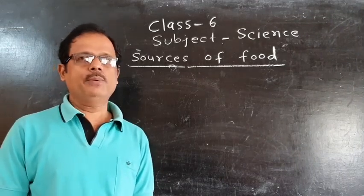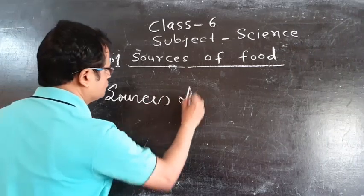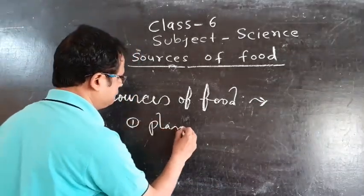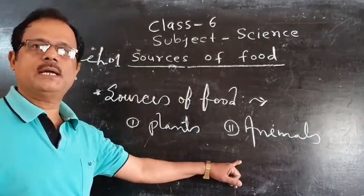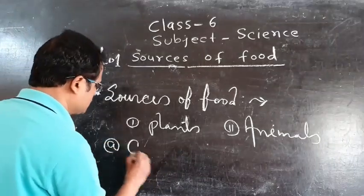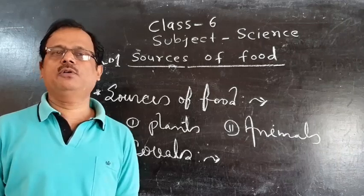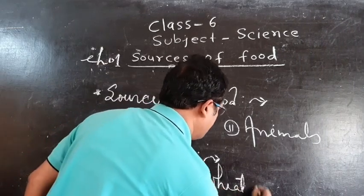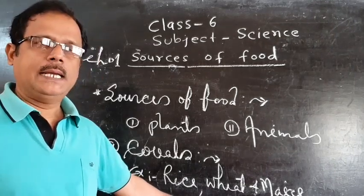After the importance of food, we will learn about the sources of food. There are two important sources: first is plants, and second is animals. From plants, we obtain food such as cereals. Cereals are grains we utilize for food — for example, rice, wheat, and maize. These are called cereals and they provide carbohydrates and give us energy.